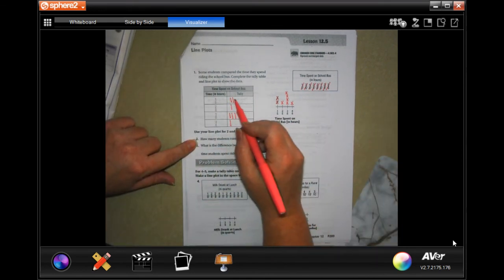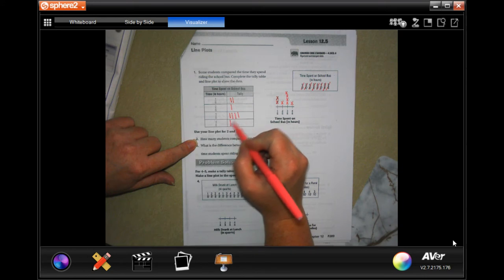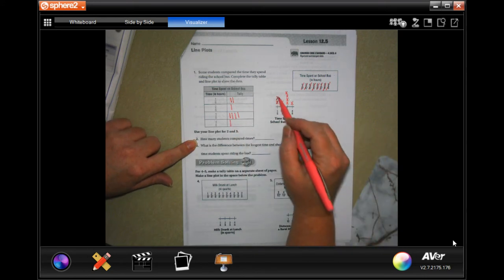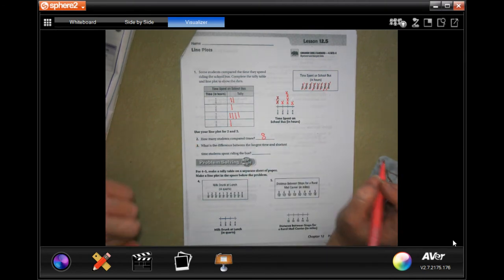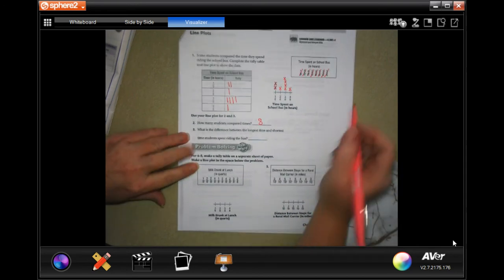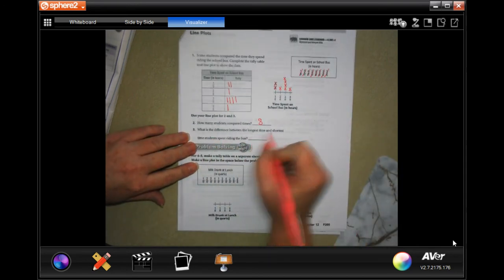So now it says how many students compared times? Well I have one, two, three, four, five, six, seven, eight tally marks. Both eight students compared. Okay, what is the difference between the longest time and the shortest time the students spent on the bus?